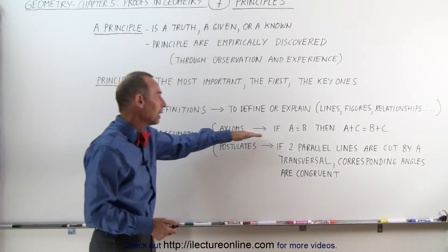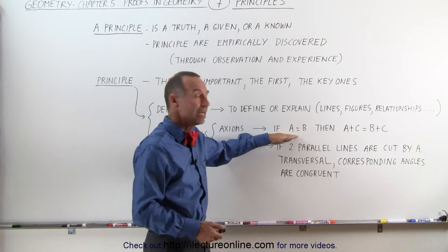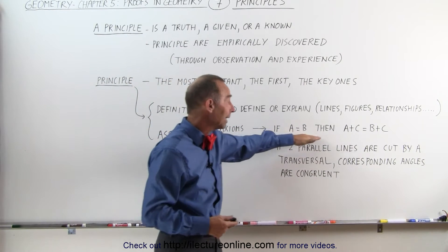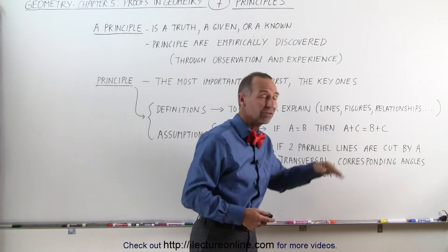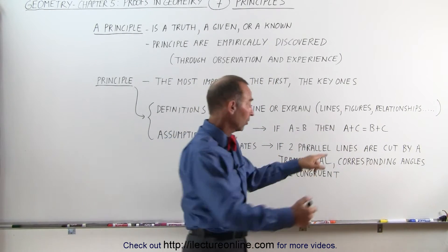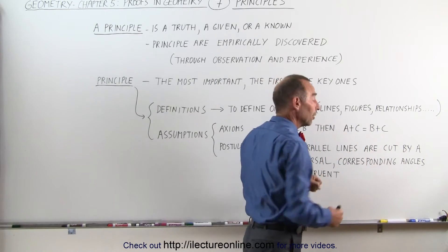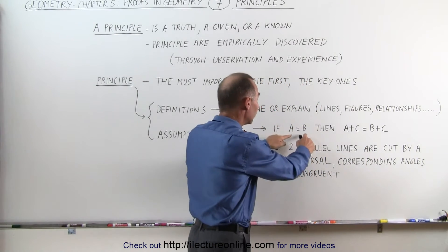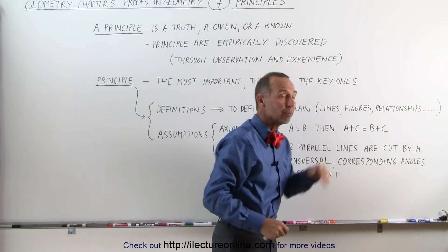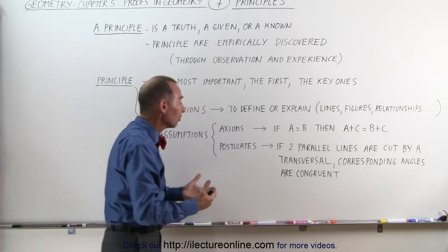A good axiom would be that if A is equal to B, if A and B are equals, then A plus C must equal B plus C, because when we add equals, C and C are equal to one another, to two other equals, A and B, then their sums must be equal. And that would be considered an axiom.